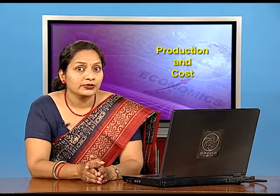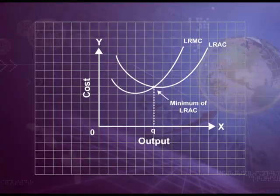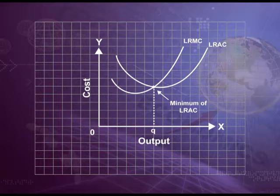We can understand this through the diagram. Long-run average cost reaches its minimum at Q units. To the left of Q, long-run average cost is falling and long-run marginal cost is less than the long-run average cost curve. To the right of Q, long-run average cost is rising and long-run marginal cost is higher than long-run average cost.